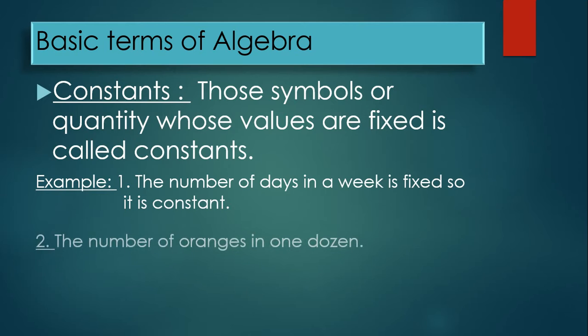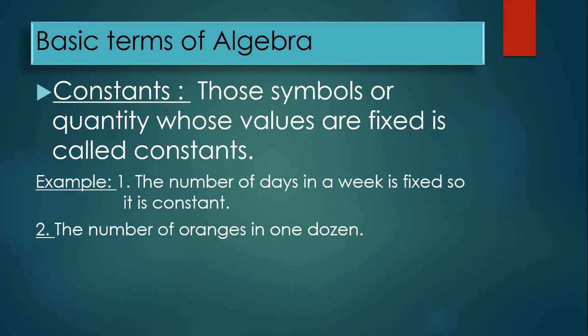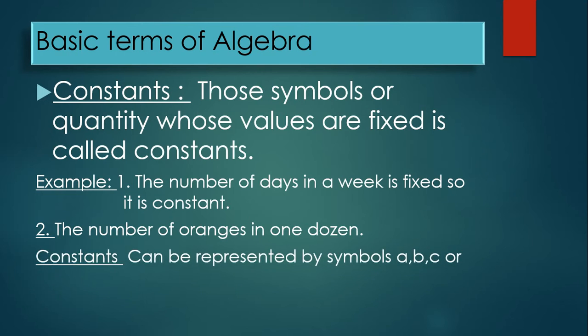Another example: the number of oranges in one dozen. One dozen always equals 12 items — 12 oranges. No matter what, one dozen means 12 items. This is also a constant. Constants can be represented by symbols such as a, b, or c.